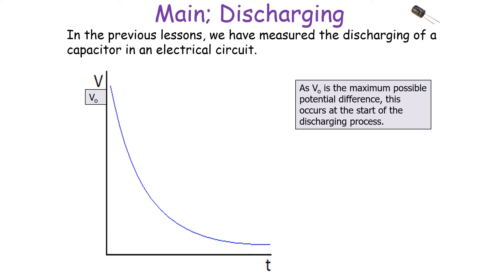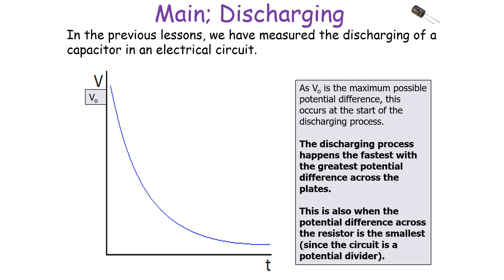This process is an example of exponential decay — the rate of change, in this instance decrease, also decreases over time. V0 is the maximum possible potential difference, occurring at the start of the discharging process. The discharging process happens fastest when there is the greatest potential difference across the plates, which is at the start of discharge. This is also when the potential difference across the resistor in the circuit is the smallest, since the circuit acts as a potential divider — if PD is largest across the capacitor, it is smallest across the series resistor.